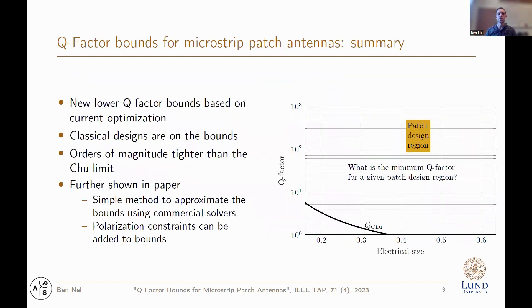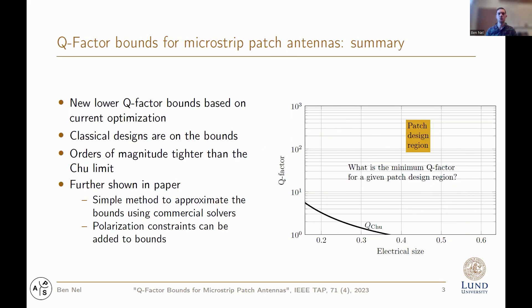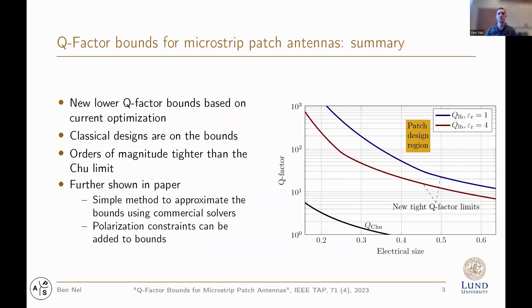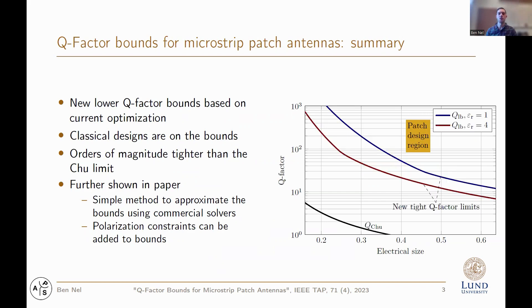To summarize, we've been able to show new lower Q-factor bounds based on current optimization. Classical patch geometries are shown to be on top of the bounds. The bounds are orders of magnitude tighter than the Chu limit. Further, in the paper you will find a simple method we propose for approximating the bounds using commercial solvers. We also add polarization constraints to the bounds. With that, I thank you for listening and I hope you find the time to read the paper.